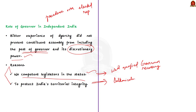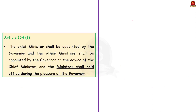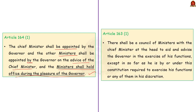By mentioning these two points, the constitution makers defended the post of governor and his discretionary powers. Now, Article 164(1) states that the governor shall appoint the Chief Minister, and all other ministers are appointed by the governor on the advice of the Chief Minister. This article also mentions that the ministers shall hold office during the pleasure of the governor. Article 164(1) must be read along with Article 163, which says that the governor should act in accordance with the aid and advice of the council of ministers headed by the Chief Minister.